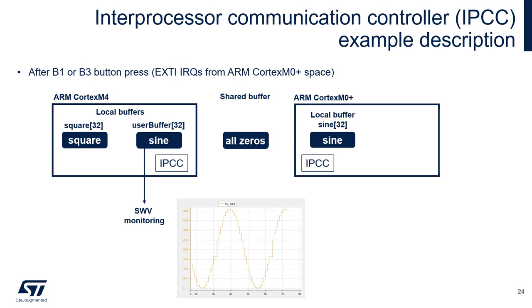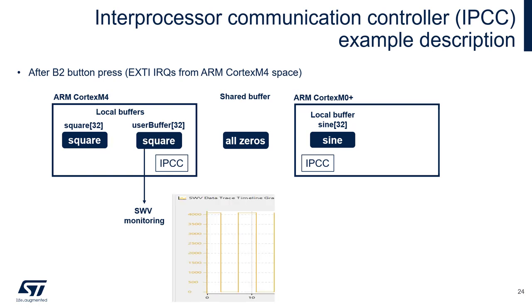In the meantime, if we press button B2 — which is assigned to Cortex-M4 — Cortex-M4 will copy the content of its square wave buffer to the user buffer, replacing the sine wave samples with the square wave samples. We will then see the square wave again on the single wire viewer instead of the sine wave.